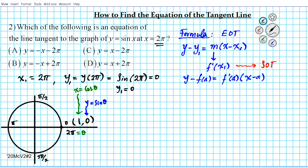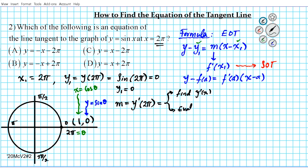We have x one and y one. The last thing we need is m, and we're going to need some calculus for that. M is the derivative evaluated at the x coordinate. Your SOT — slope of the tangent line — involves finding the derivative first, and then evaluating your derivative at the specified x value, which is 2 pi in this particular case.